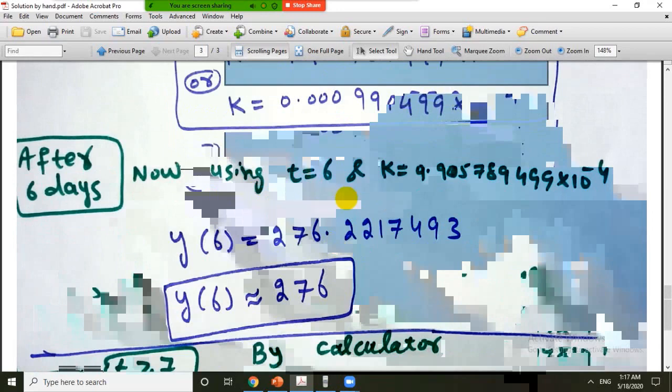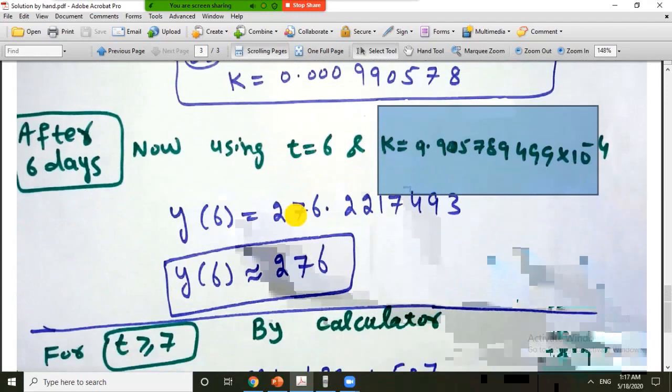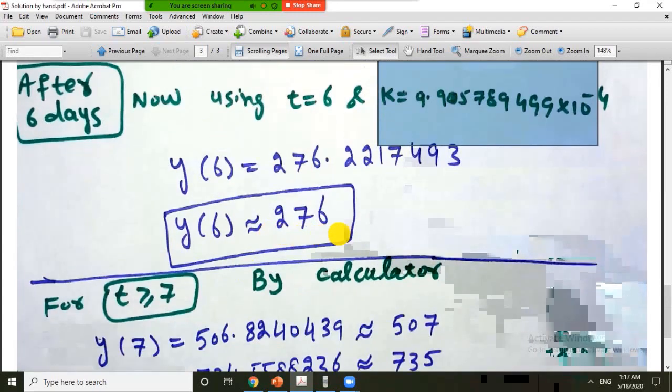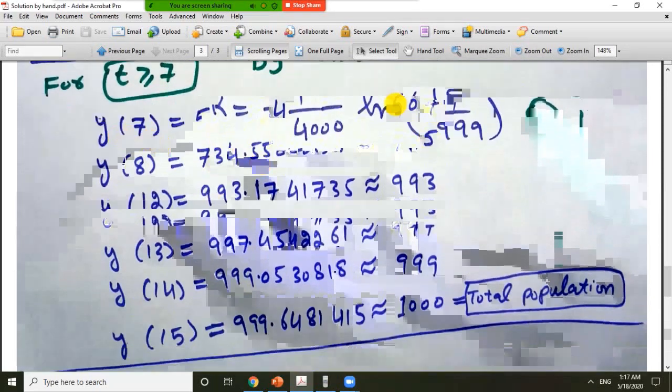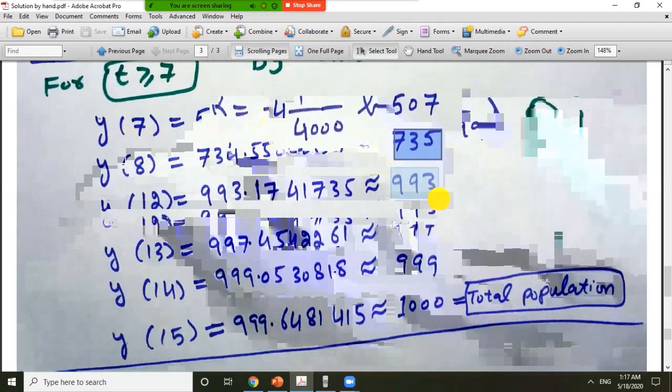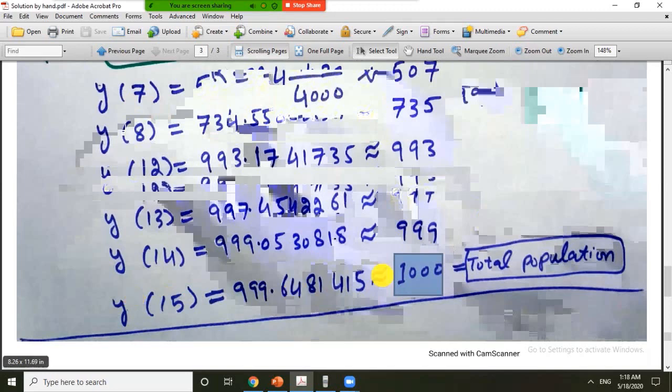After 6 days now use this value in the calculator to find the required number of students. So if we use the values t is equal to 6 and k is equal to this, the number of infected students will be 276. Similarly by calculator we can also find that after 7 days the number will be 507, after 8 it will be 735, after 12 days 993, after 14 days 999. And after 15 days it is approximately 1,000. The total population will be infected after 15 days.